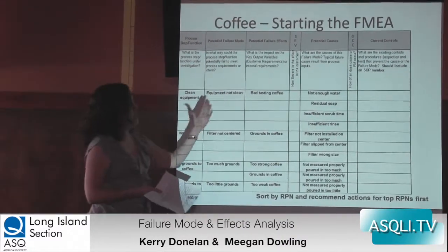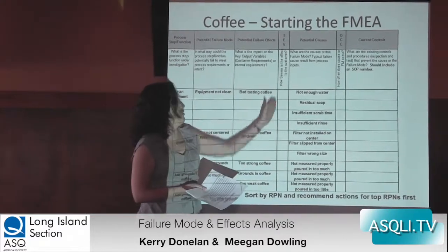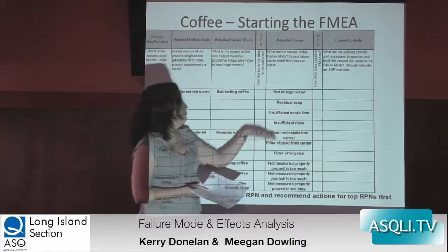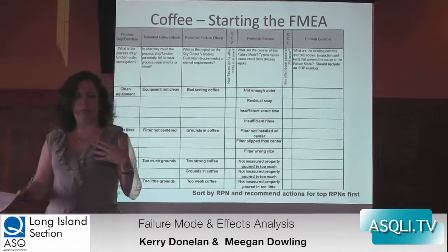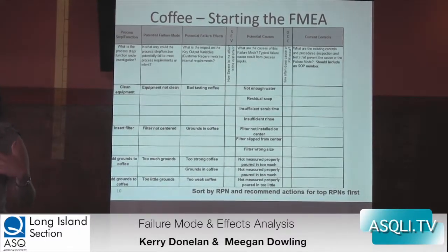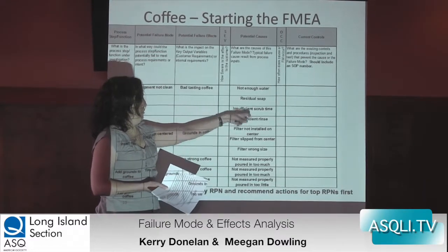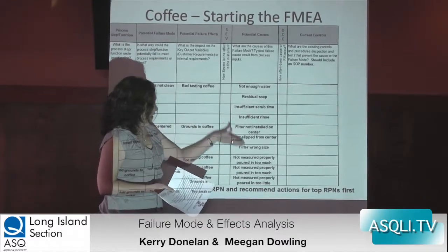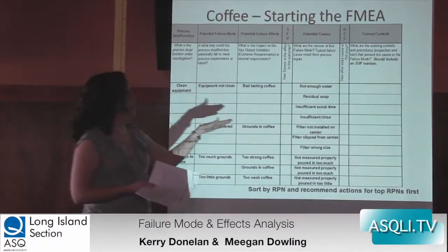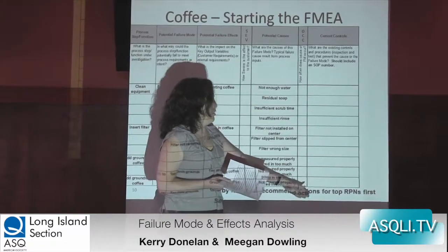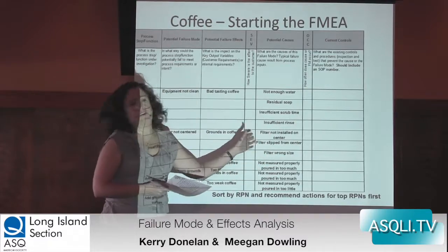What would happen is you go back and say: if this happened in our process, how severe would that be — 1 to 10? Here are our causes. How often do they occur? What's been our experience — how often did we find we didn't have enough water, or residual soap? How often have we found these things? You have to do some measuring here too. And then once you've identified any current controls, how good are they at detecting the problems you've identified?